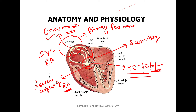Next we have the Bundle of His. As you can see here, this particular portion is the Bundle of His. It is located at the interventricular septum — this particular location is the interventricular septum.